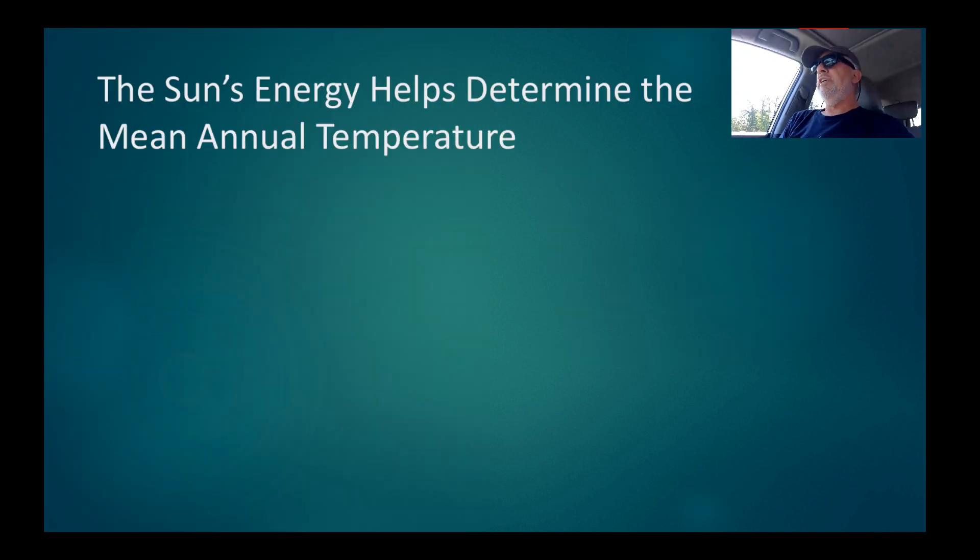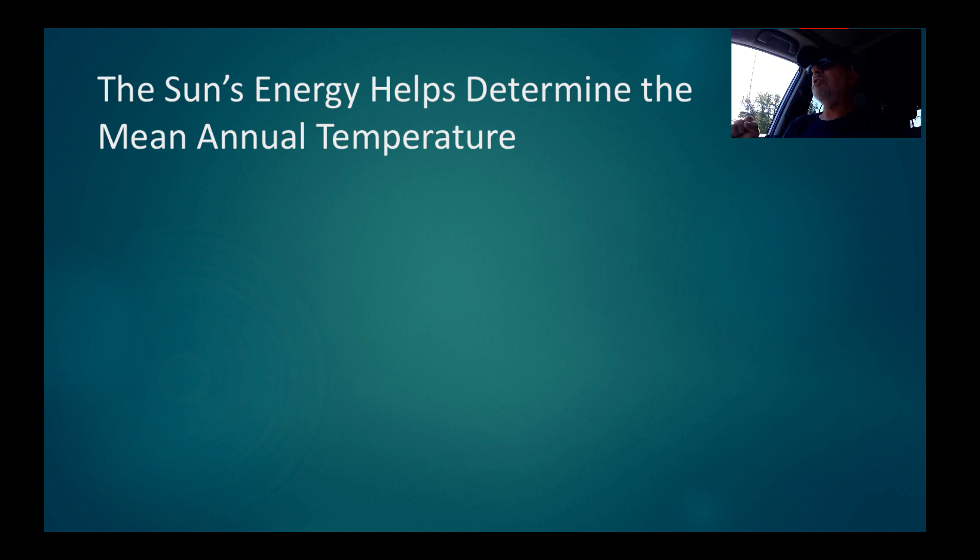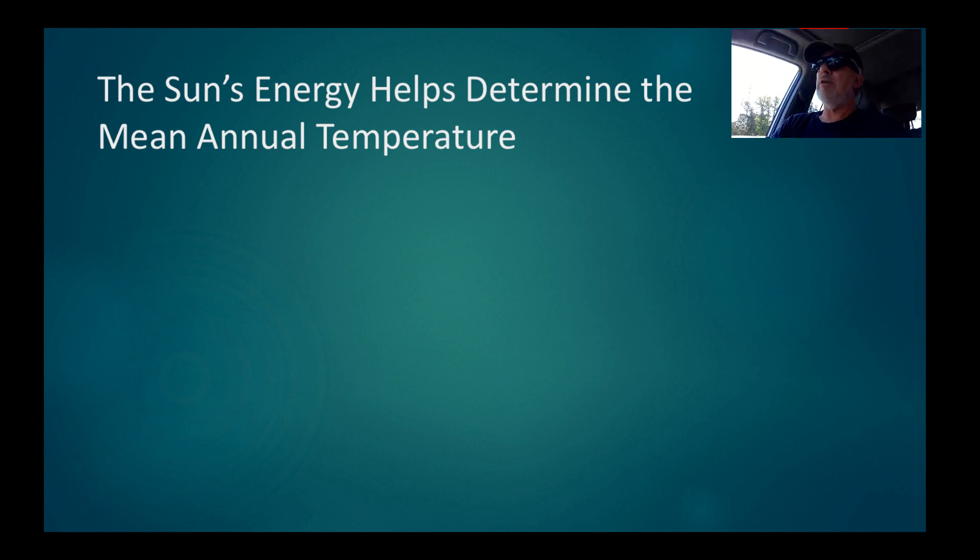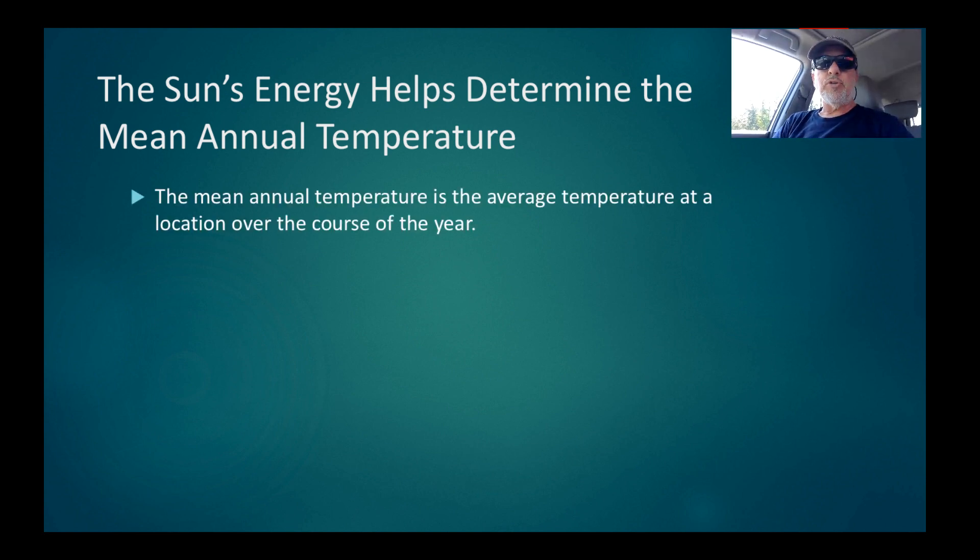The sun's energy helps determine the mean annual temperature in an area. If we were to think about Washington, D.C. over the course of the year, what is the average annual temperature? Take the temperature every hour of every day and then average those 24 hours over 365 days of the year, you will have the mean annual temperature for D.C. And of course, then we do it over 30 years to make it a climatic variable.